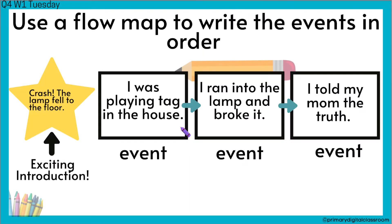On Tuesday, what you're doing is making a flow map for your narrative, writing the events that happened. I have my exciting sentence, then my first event was I was playing tag in the house, then I ran into a lamp and broke it, and then I told my mom the truth. You're writing the events that happened — it could be two, three, four, or however many events you want to include.